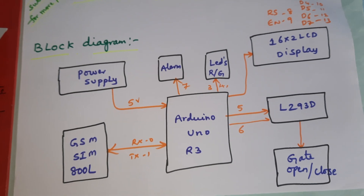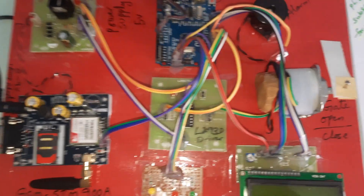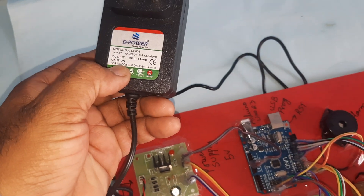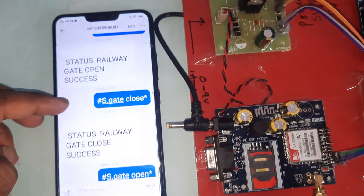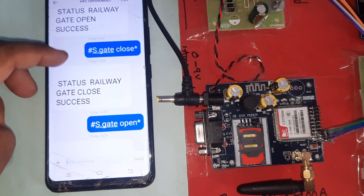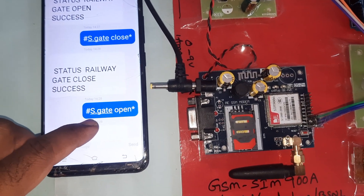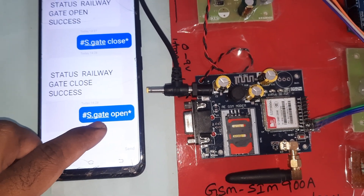This is our total block diagram. Now let us move to the hardware part. Here we are using a 0 to 9 volts adapter power source. For gate open/close, send SMS: hash capital S dot G-A-T-E space OPEN.